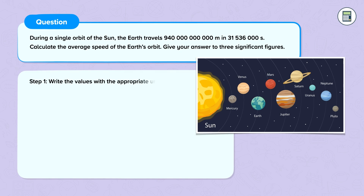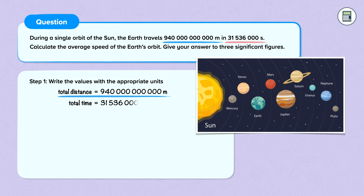Step 1: Write the values with the appropriate units. The question states that the total distance travelled by the Earth is 940 billion metres and the total time to travel this distance is 31,536,000 seconds.